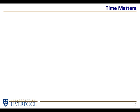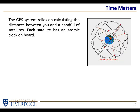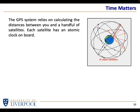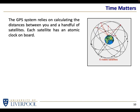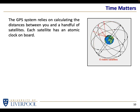Even here on Earth, accurate time matters. In the GPS system, we have satellites sitting a few thousand miles above the Earth's surface. The idea of picking up signals from various satellites and working out where you are is based purely on timing. Every GPS satellite has an atomic clock on board. Your phone doesn't need to have accurate time — it relies on every satellite knowing exactly what the time is, works out how far you must be from each satellite knowing the speed of light, and determines your position on the surface of the Earth.